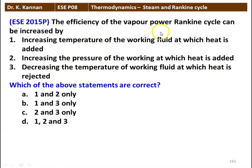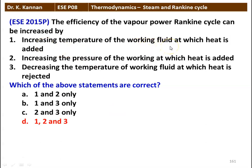Next question: the efficiency of the vapor power Rankine cycle can be increased by: 1. increasing the temperature of the working fluid at which heat is added, 2. increasing the pressure of the working fluid at which heat is added, 3. decreasing the temperature of the working fluid at which heat is rejected. Which of the above statements are correct? The answer is 1, 2, 3 — all three statements are correct for increasing the efficiency of the Rankine cycle: increasing the temperature in the boiler, increasing the pressure in the boiler, and decreasing the temperature in the condenser.